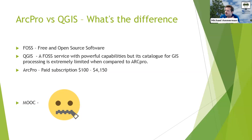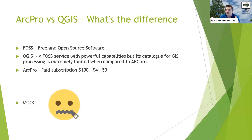ArcPro is a paid subscription. They have subscription services starting around $100 for individuals just getting started or recent graduates wanting to continue working with GIS. The advanced Pro license for businesses can cost up to $4,100 and some change for a yearly license.